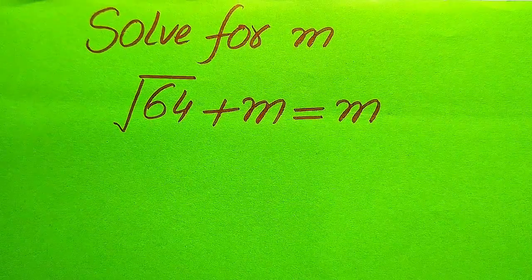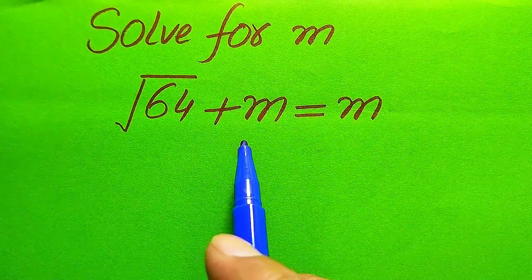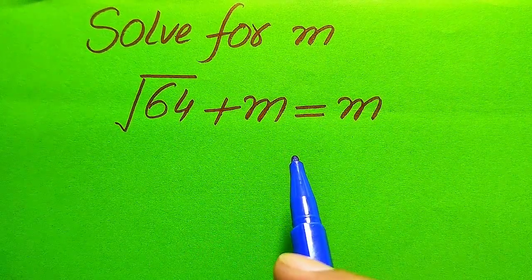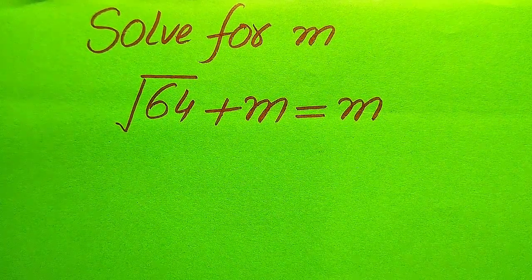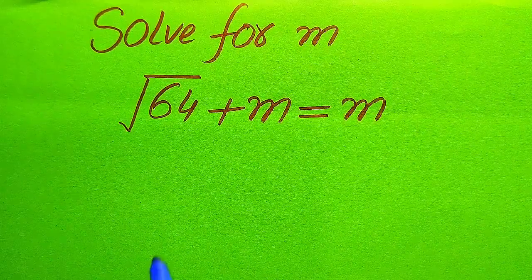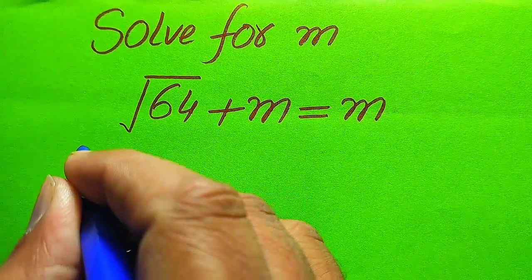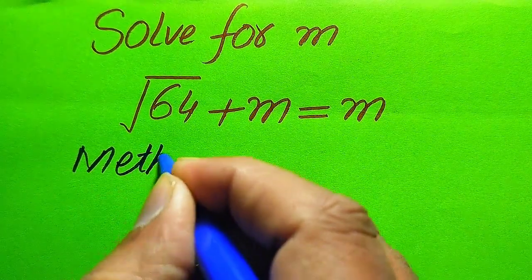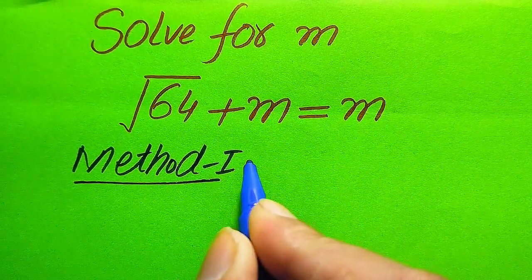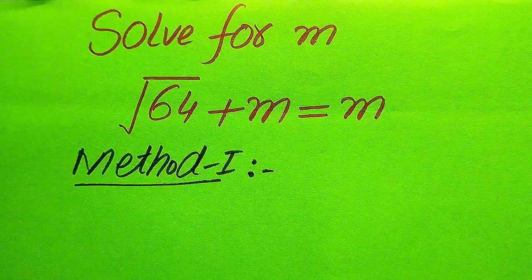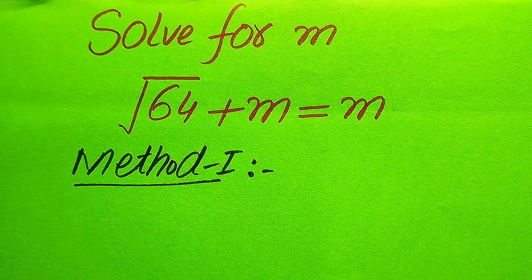Hello everyone. How to solve this problem for the values of m if we have square root of 64 plus m equals to m. We solve this problem for all the values of m. First we need to find all the roots of this equation, and at the last we will verify which of the roots are solutions and which are extraneous roots. We solve this problem using two methods.